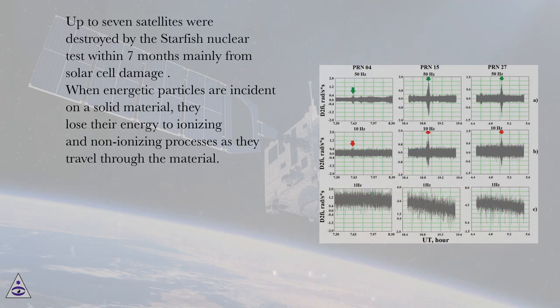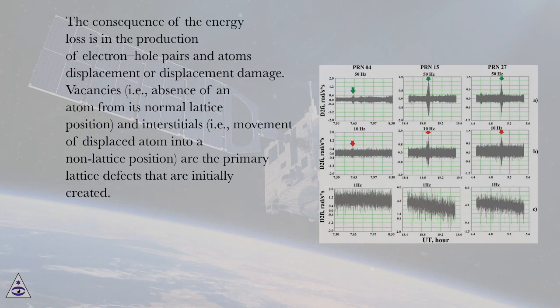When energetic particles are incident on a solid material, they lose their energy to ionizing and non-ionizing processes as they travel through the material. The consequence of the energy loss is in the production of electron-hole pairs and atoms' displacement or displacement damage.